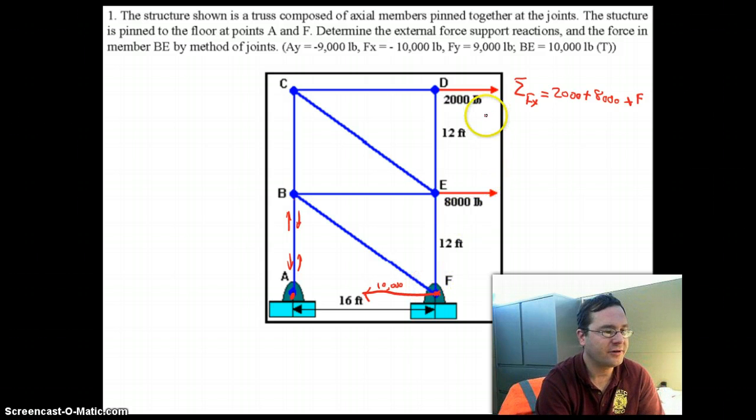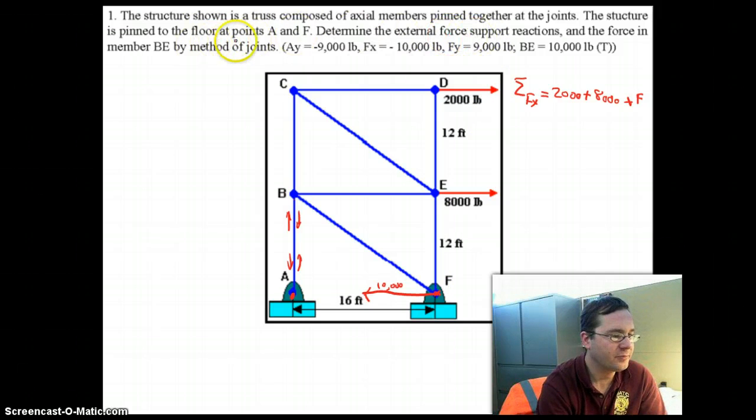So, let's think about what else we know, let's see what it's asking us to find. Structures pinned at points A and F determine the external force. So we know there is no horizontal component at A. We still have yet to figure out vertical components. And we want to find the force in members BE by method of joints.